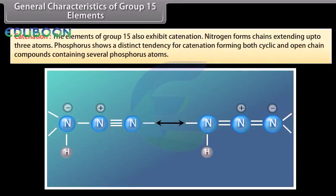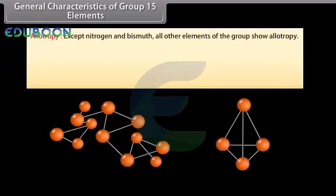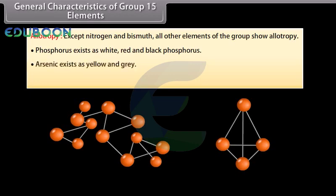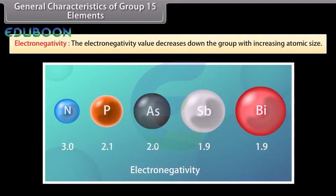General characteristics of group 15 elements: Catenation — elements of group 15 exhibit catenation. Nitrogen forms chains extending up to 3 atoms, while phosphorus shows a distinct tendency for catenation, forming both cyclic and open chain compounds containing several phosphorus atoms. Allotropy — except nitrogen and bismuth, all other elements show allotropy. Phosphorus exists as white, red and black phosphorus; arsenic and antimony each exist as yellow and grey forms. Electronegativity decreases down the group with increasing atomic size.